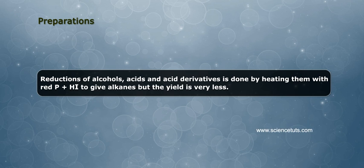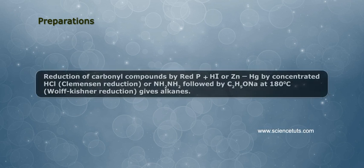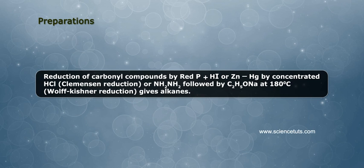Reduction of carbonyl compounds by red phosphorus plus HI or Zn-Hg by concentrated HCl, Clemmensen reduction, or NH2-NH2 followed by C2H5ONa at 180 degrees centigrade, Wolff-Kishner reduction, gives alkanes.